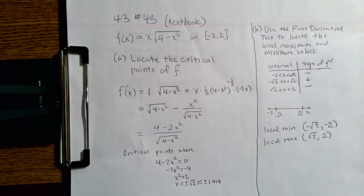Part B asks us to use the first derivative test to locate local maxima and minimum values. That's what the test is used for, to help us determine where we have local maxima, local minima. That has to do with what's happening to the sign of the first derivative.